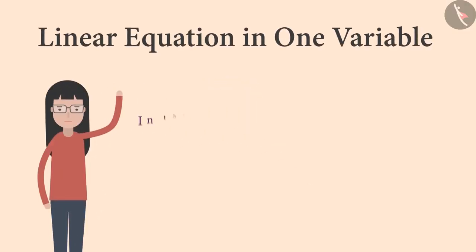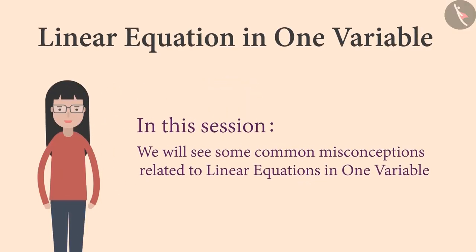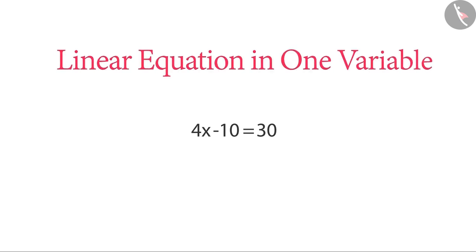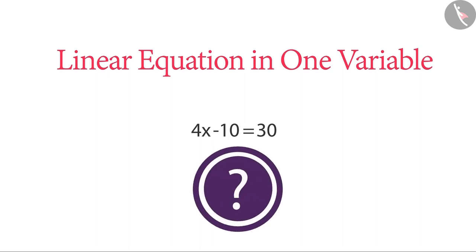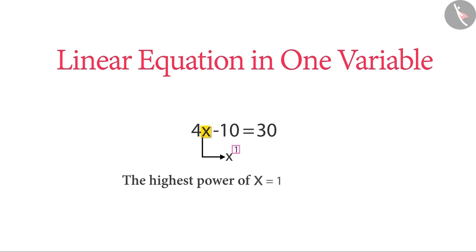In this session we will see some common misconceptions related to linear equations in one variable. Look at this equation — we have learned that this is called a linear equation in one variable. Why? Because first of all it has only one variable, and second, the highest power of the variable is one.